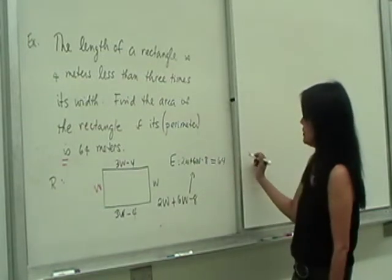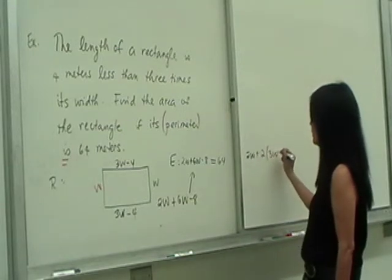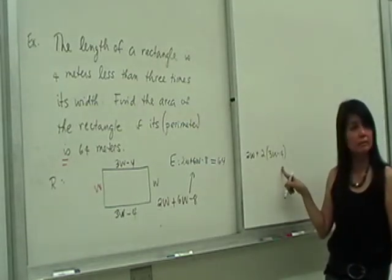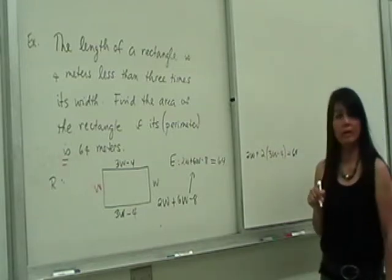Alternatively, you could also have written like 2W plus 2 times 3W minus 4. Do you guys see that? 2W plus 2L, right? Twice the W plus twice the length is equal to 64.